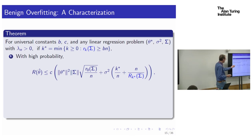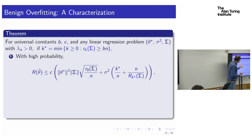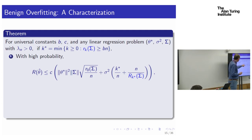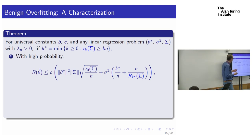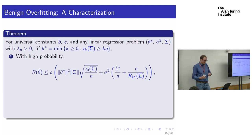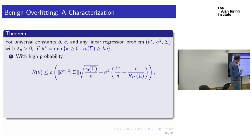We want K-star, the critical dimension, to be not too big compared to N, and we want capital R_{K-star} to be really big compared to N. That's what makes the upper bound small. It turns out this is tight — within constant factors, we can't do better. We get exactly the same expression K-star over N plus N over R_{K-star} as a lower bound.